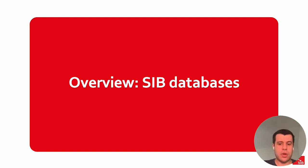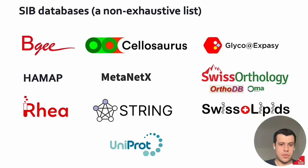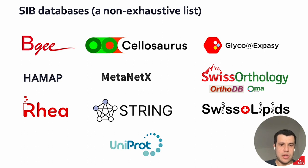First, I will give you an overview about the SIB databases. The target audience of this talk are biologists and bioinformaticians. Here you can see a non-exhaustive list of the SIB databases. They contain knowledge that spans several domains in life science, such as gene expression, protein, protein-protein interactions, and metabolic networks. In the past years, under the umbrella of SIB, these resources have been working together to improve their interoperability at different levels, from cross-references among resources to semantic search over them.